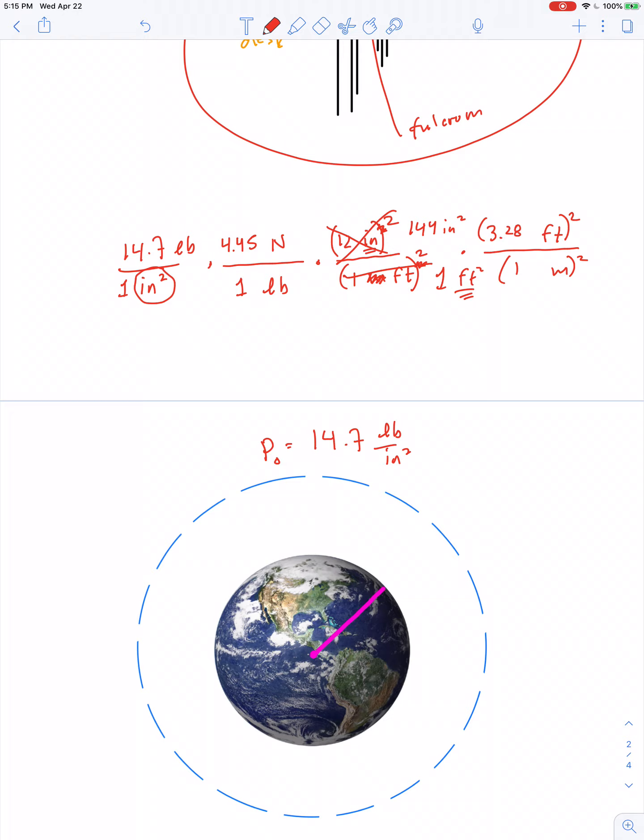14.7 times 4.45 times 144 times 3.28 squared equals 101,340 roughly. About 101,340 what?